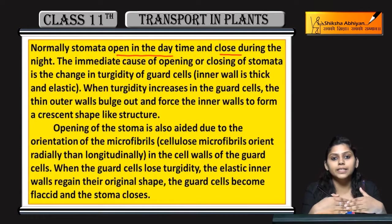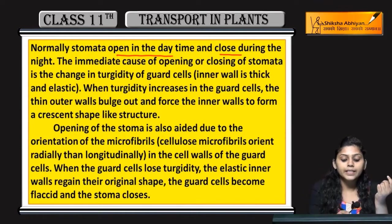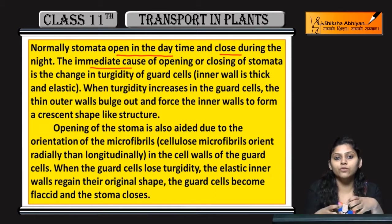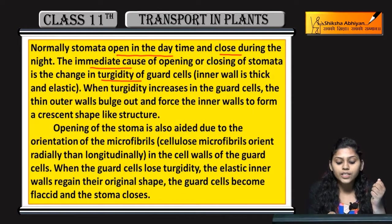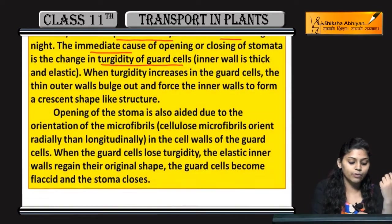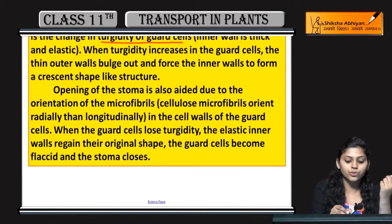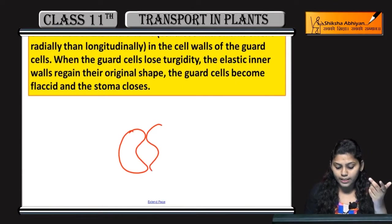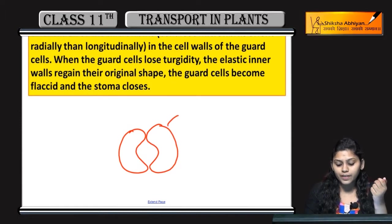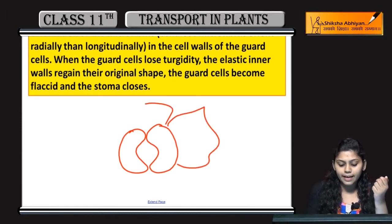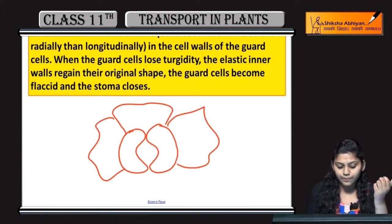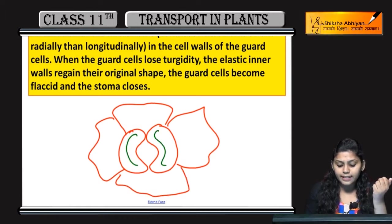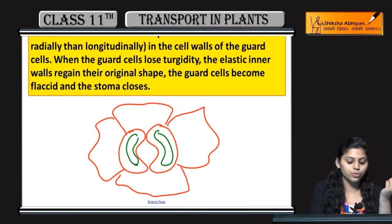The immediate cause jo hai stomata ki opening and closing ka, woh hai jo turgidity hai guard cells ki — woh change hoti hai. Stomata ke guard cells jo hain, woh bean shaped hain. Inke outer side epidermal cells hote hain. Guard cells ki turgidity change hoti hai jo stomata opening and closing ko control karti hai.